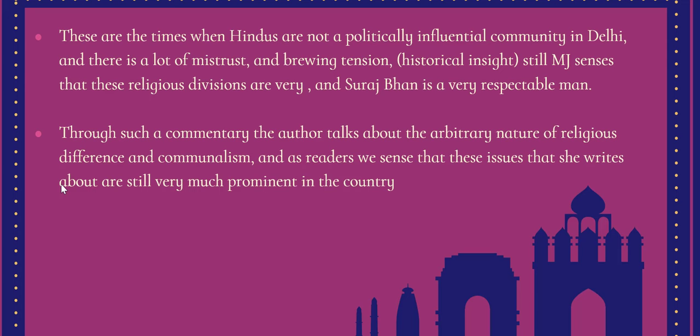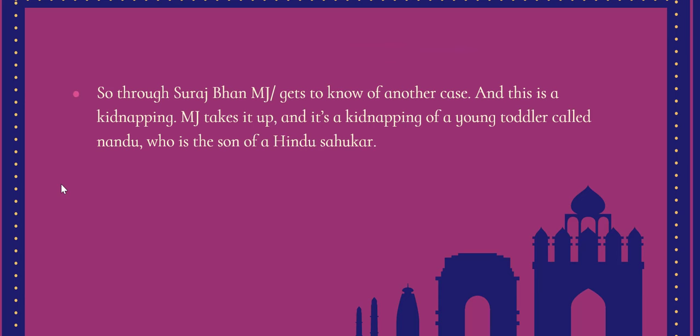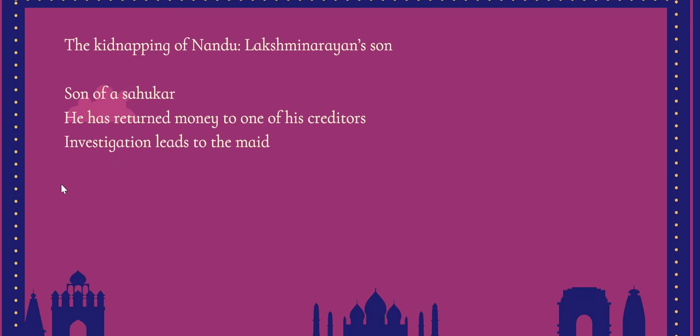Through Suraj Bhan, Muzaffar Jung learns of the kidnapping case — the kidnapping of Nandu. He takes up the case and while investigating finds out that Lakshmi Narayan had earlier lent money to another person called Jagannath. Some time before the threats began, Lakshmi Narayan started getting threatening notes from an unknown source warning him that his son would be kidnapped unless he paid a sum of money.